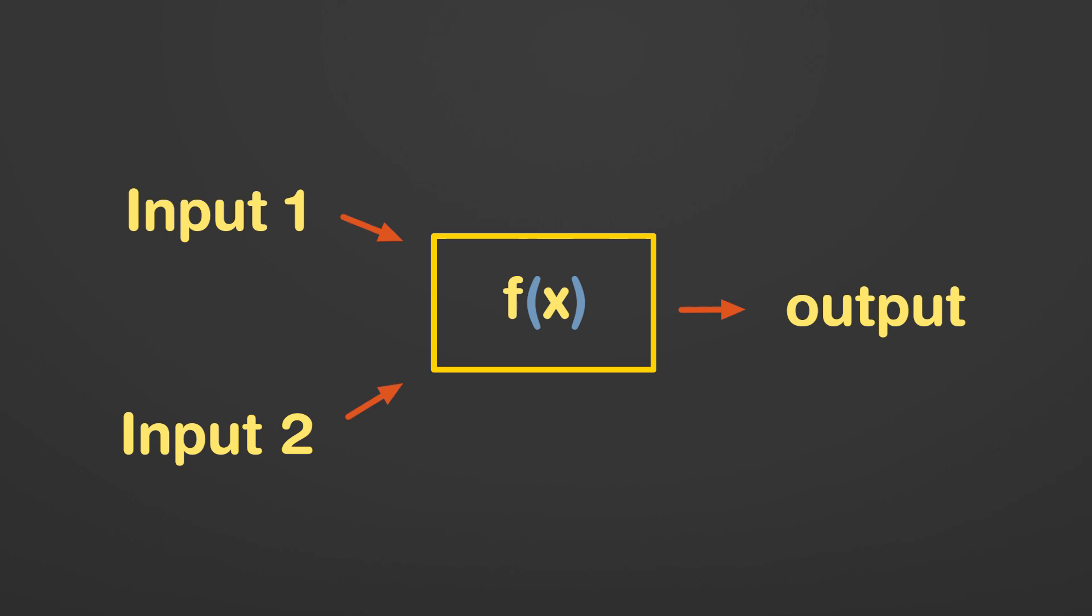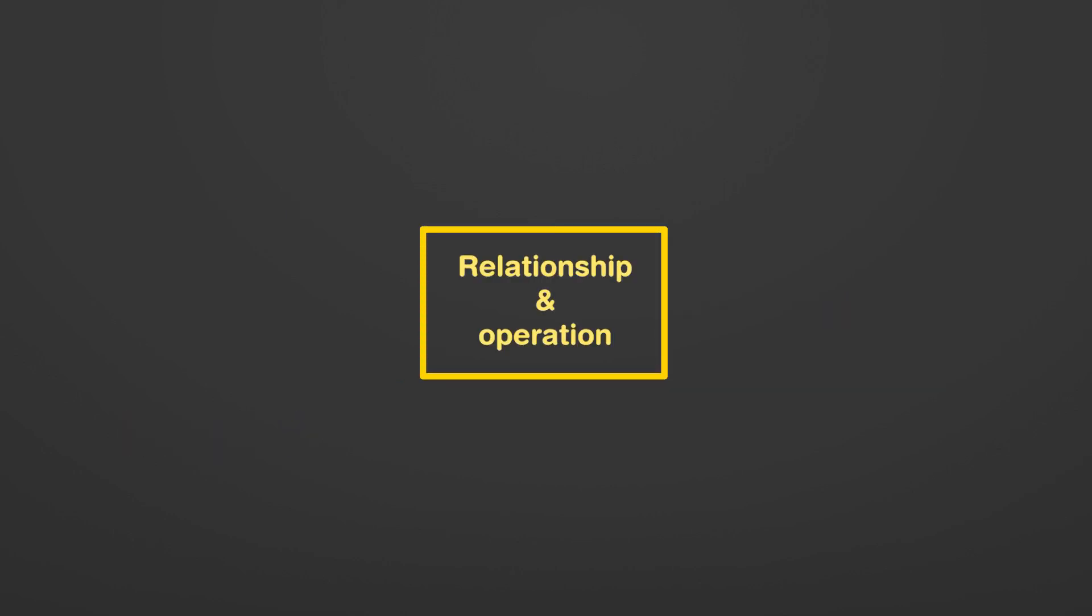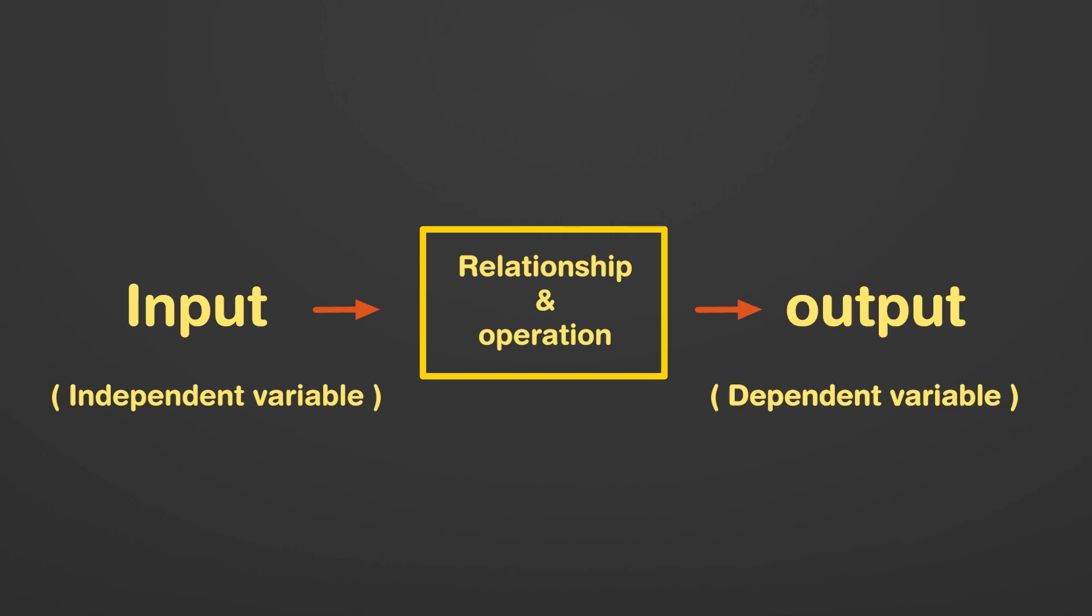To sum up all that we have covered so far, a function is a kind of relationship or a mathematical operation that is performed on input or on independent variable to give an output or dependent variable. Mathematically, a function is represented by f with a bracket and independent variables written inside the bracket. If we have one independent variable, as in the equation y equals x plus 1, the function is written as f of x equals x plus 1.